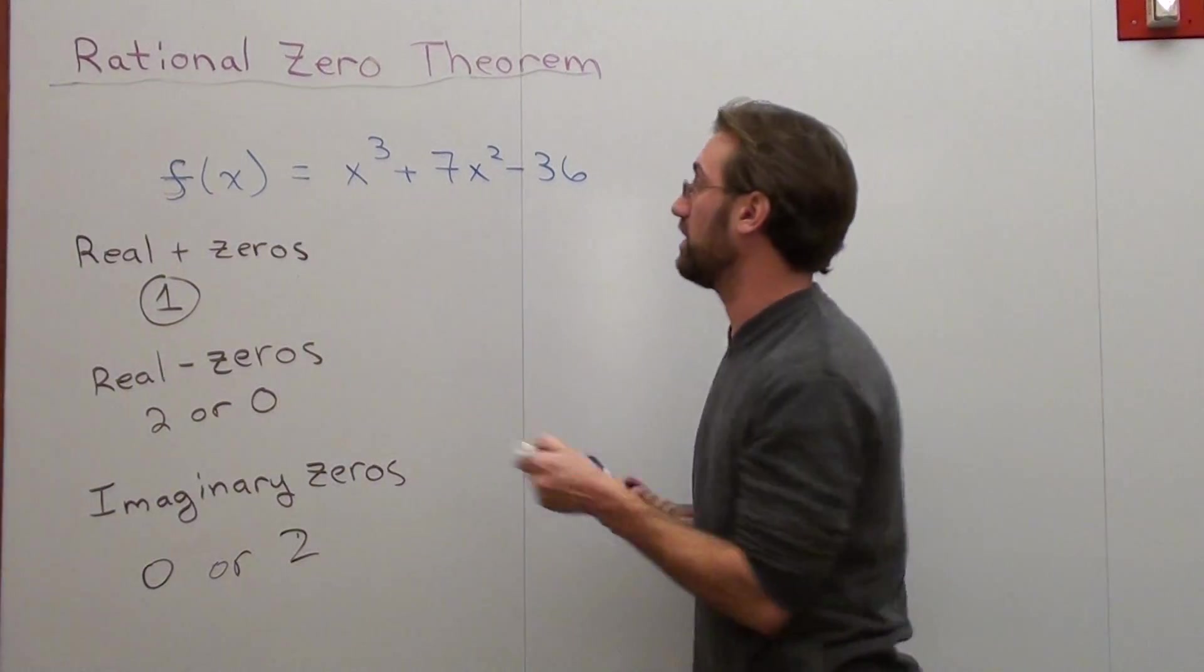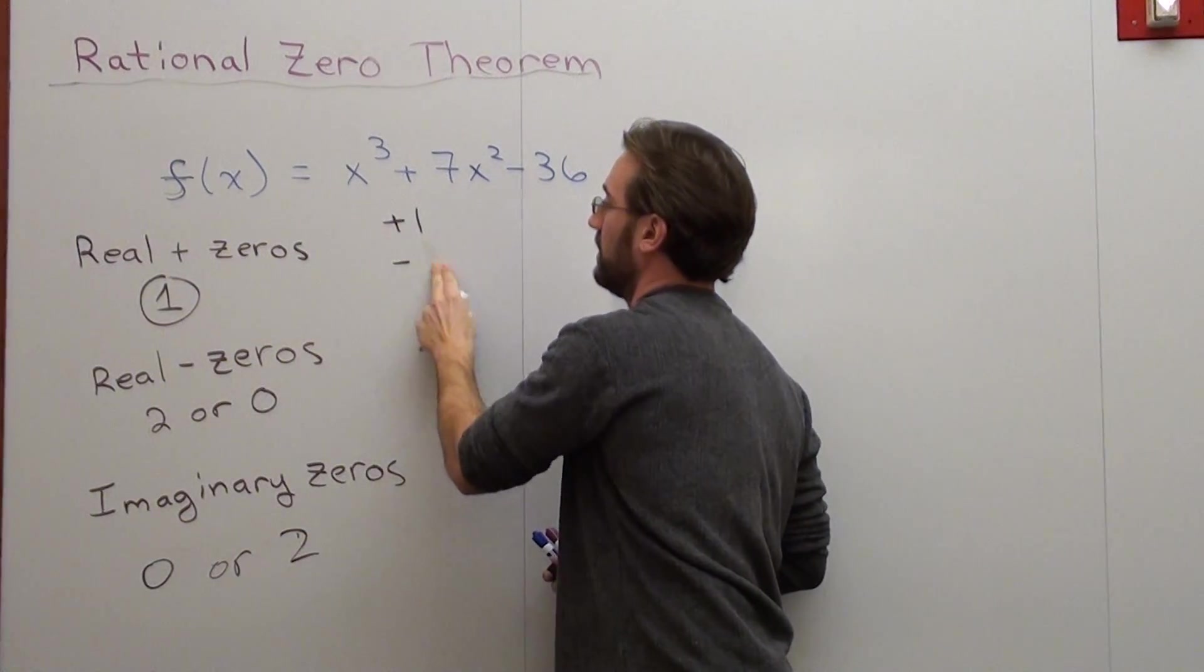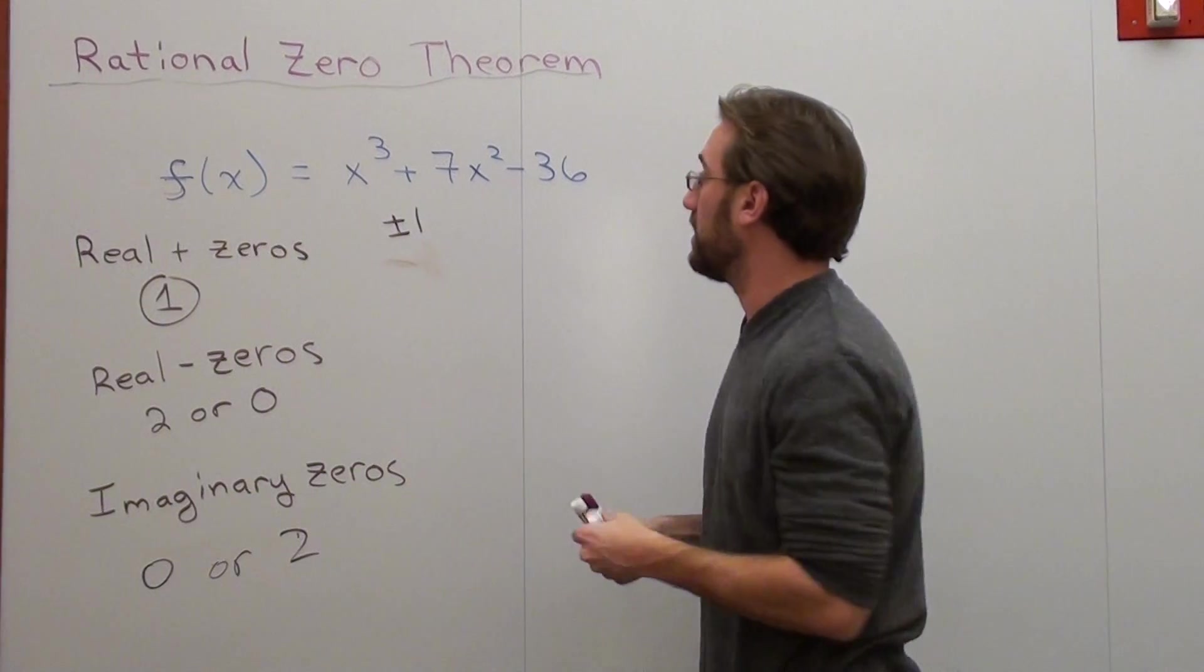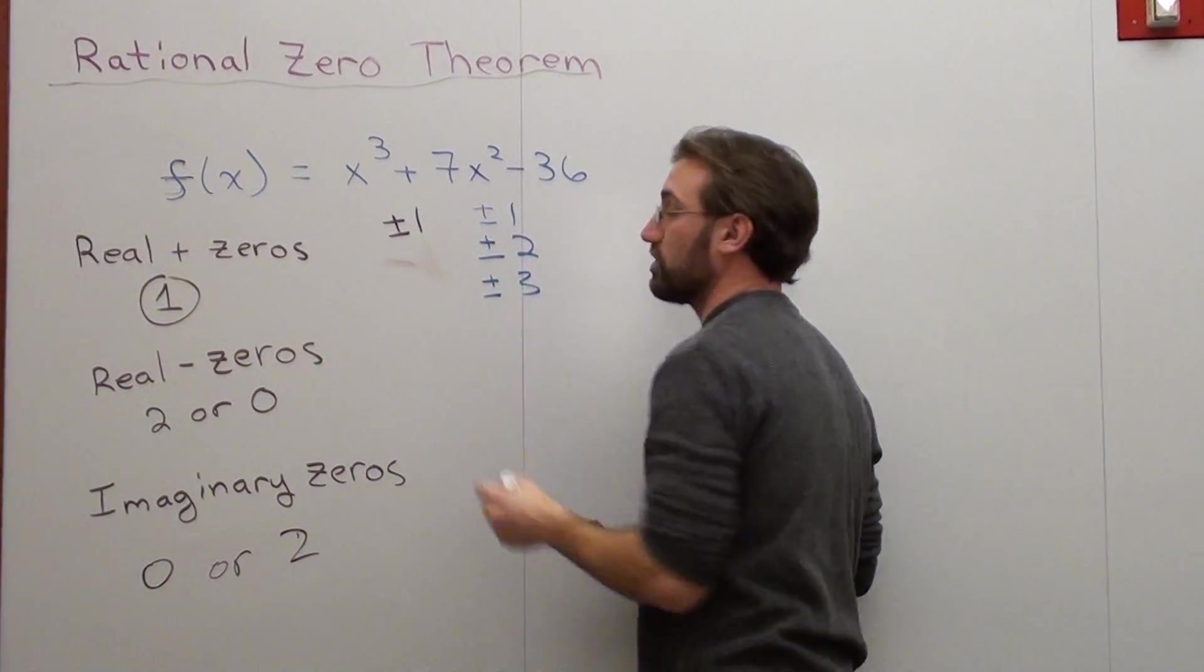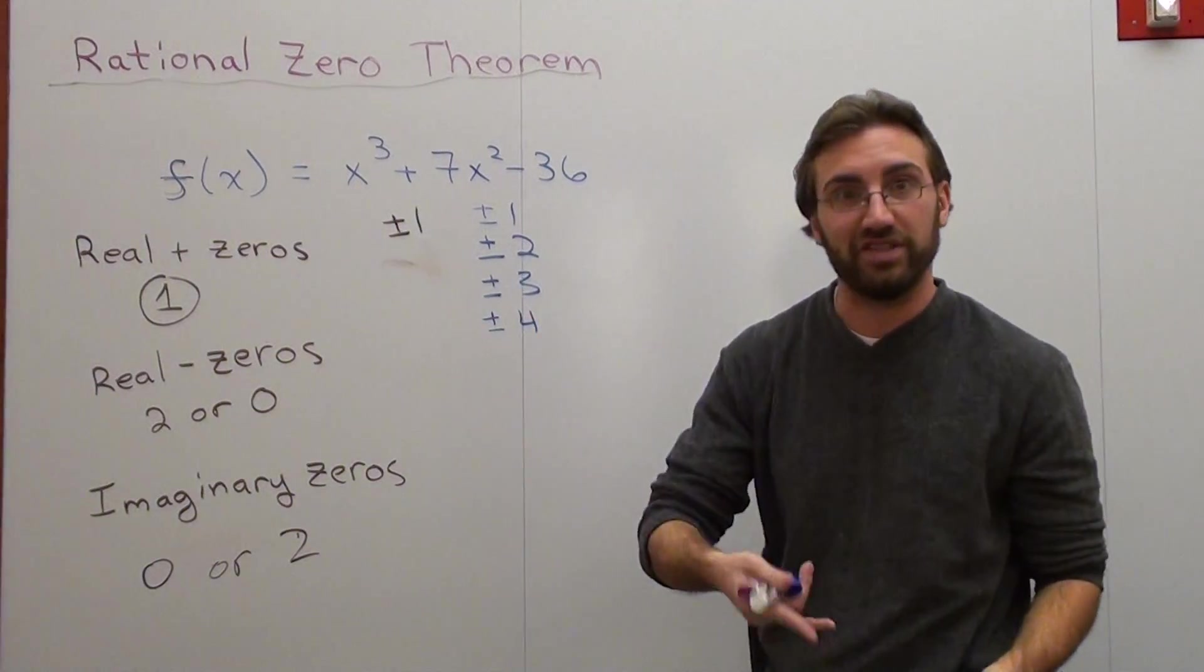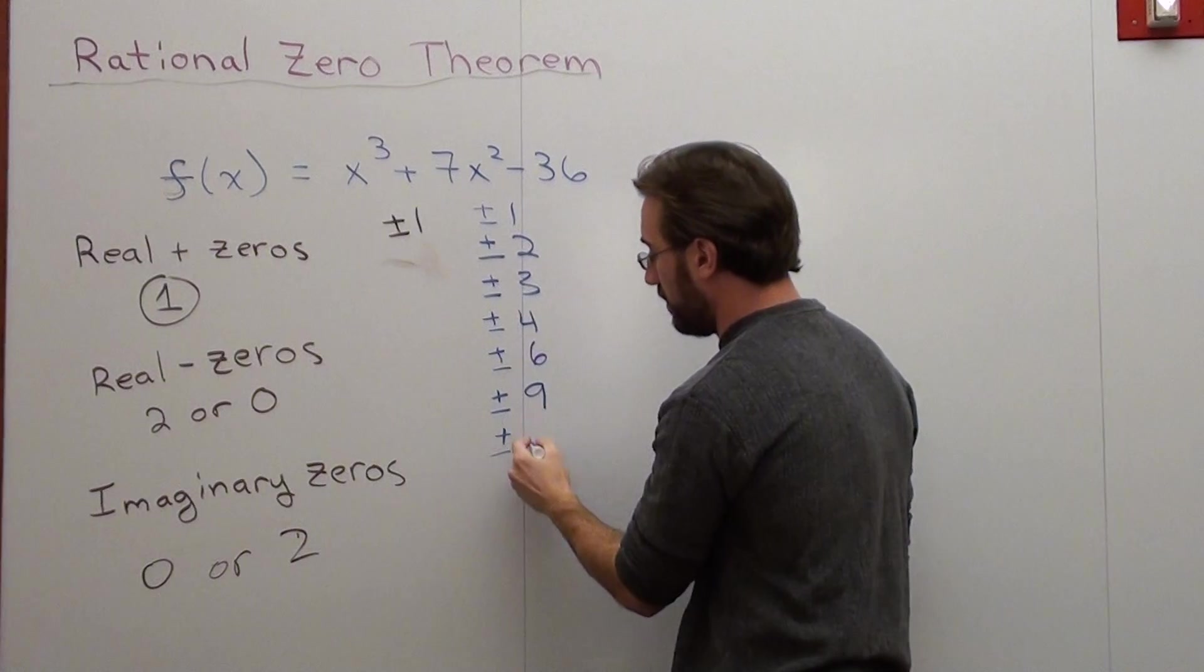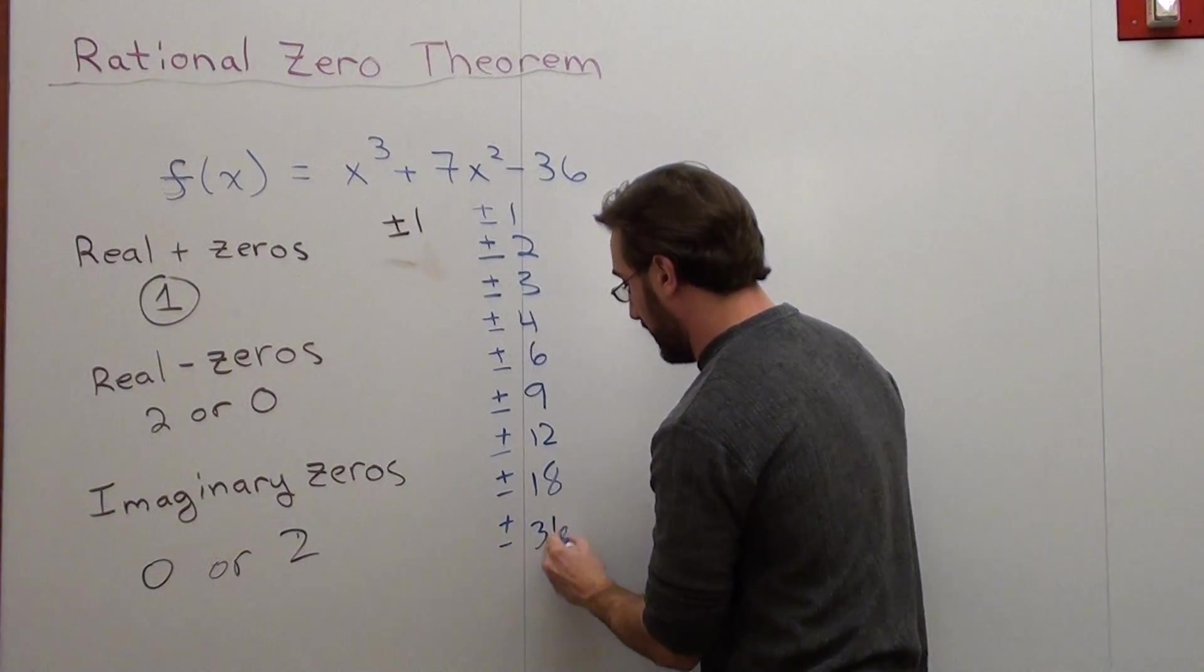Basically what you do is you write all the factors of each number. So this is a one. The factors of one are plus or minus one. For negative 36, or I should say for 36, it could be plus or minus one, plus or minus two, plus or minus three, plus or minus four, plus or minus six, plus or minus nine, plus or minus 12, plus or minus 18, plus or minus 36.